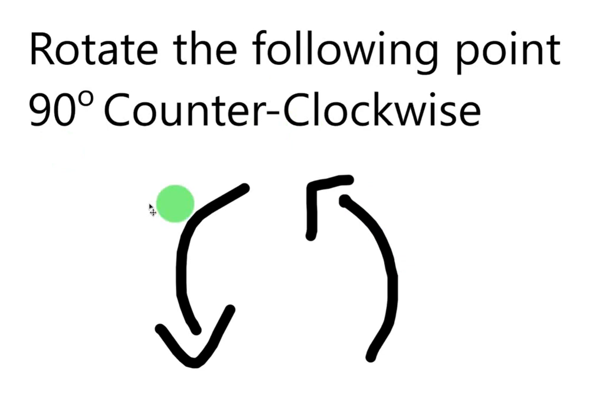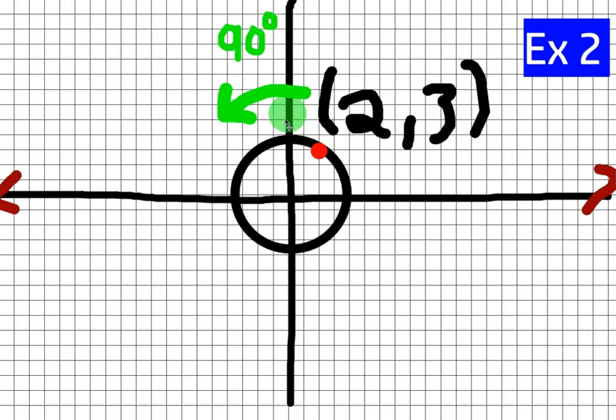And counterclockwise means going the opposite way of what a clock normally goes. We're going to rotate it 90 degrees, just like the last example, but we're going the other direction. We're going to be starting with the same point.